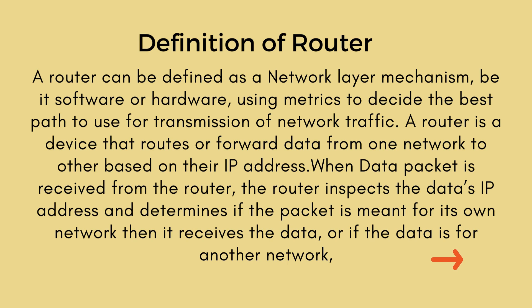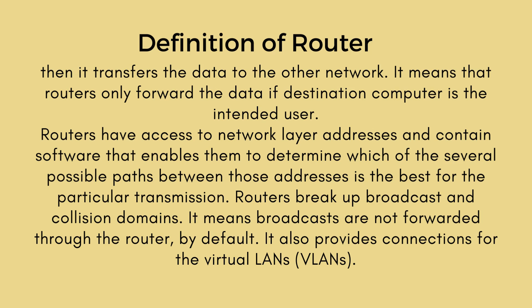When a data packet is received by the router, the router inspects the data's IP address and determines if the packet is meant for its own network — then it receives the data — or if the data is for another network, then it transfers the data to that other network. This means that routers only forward the data.